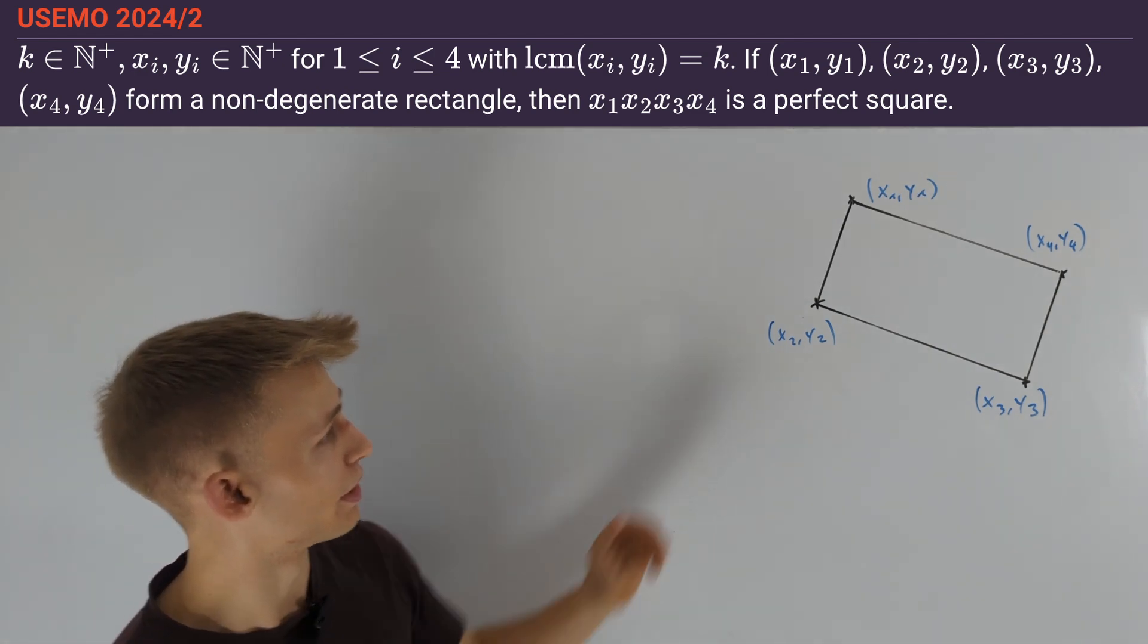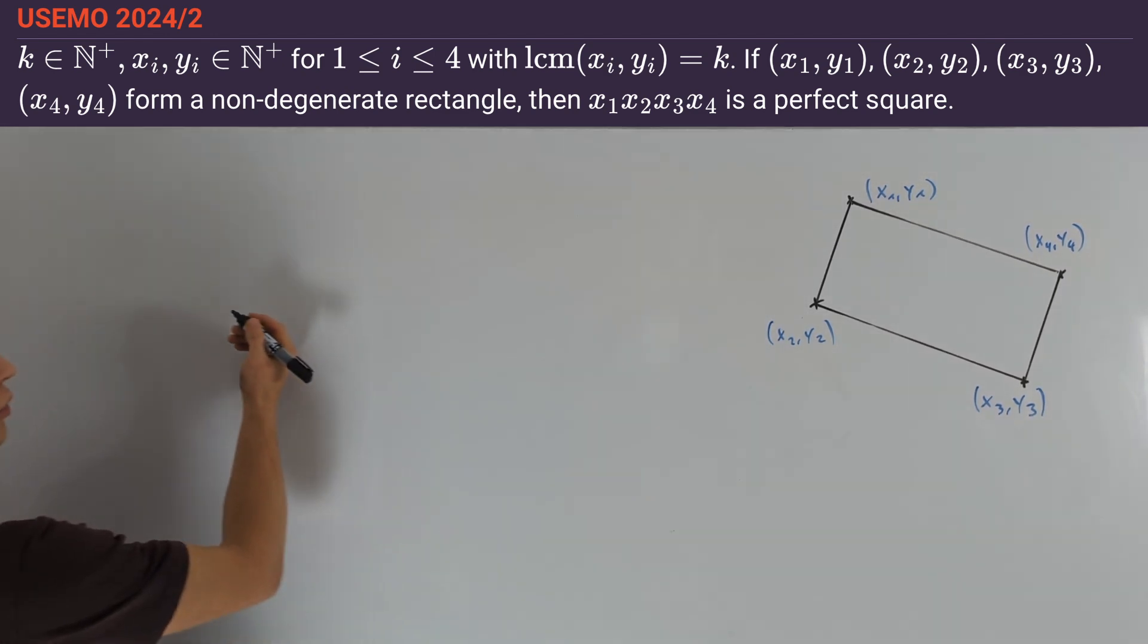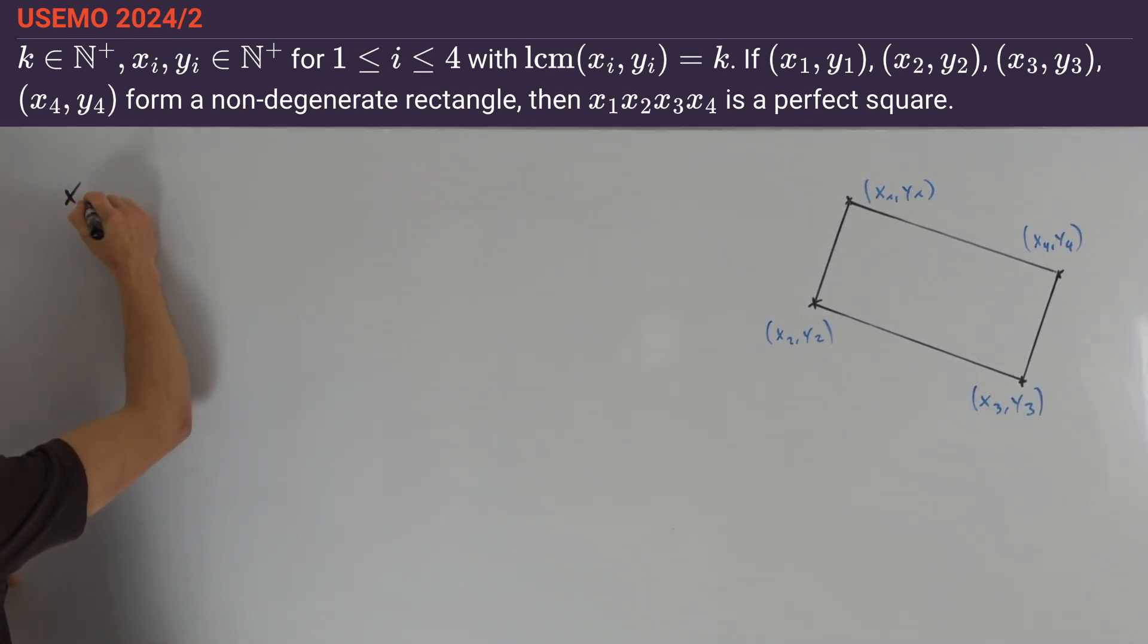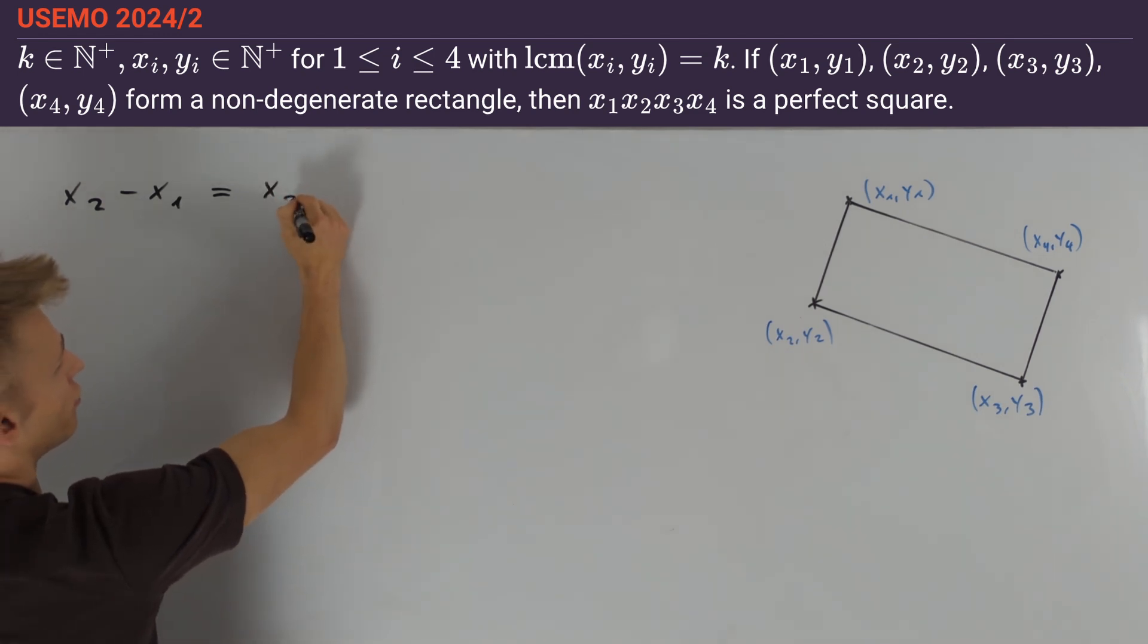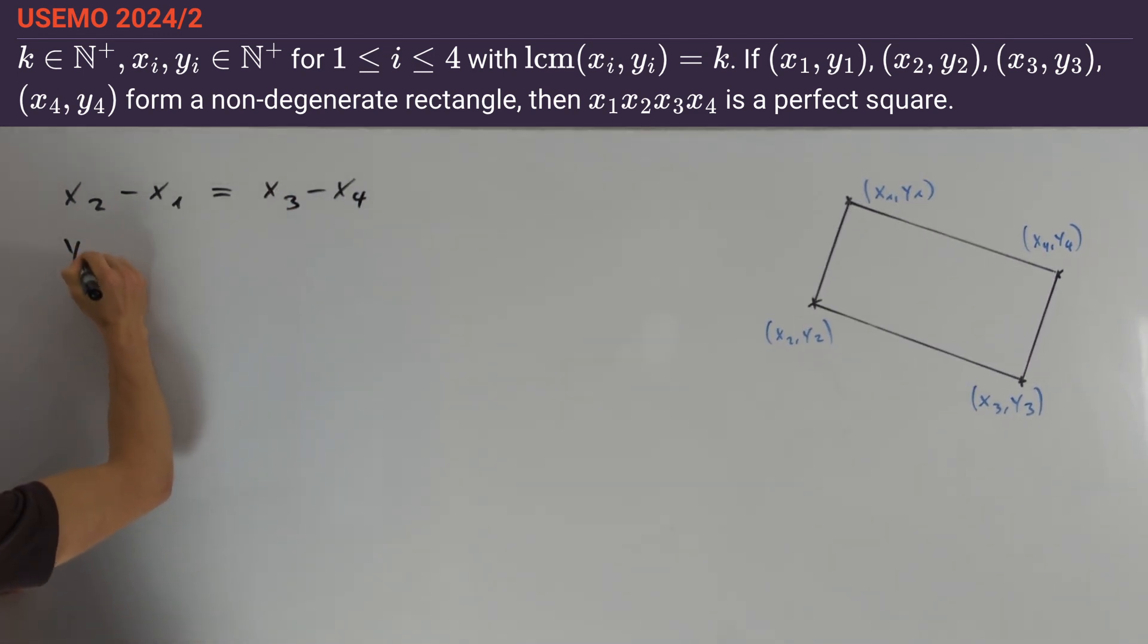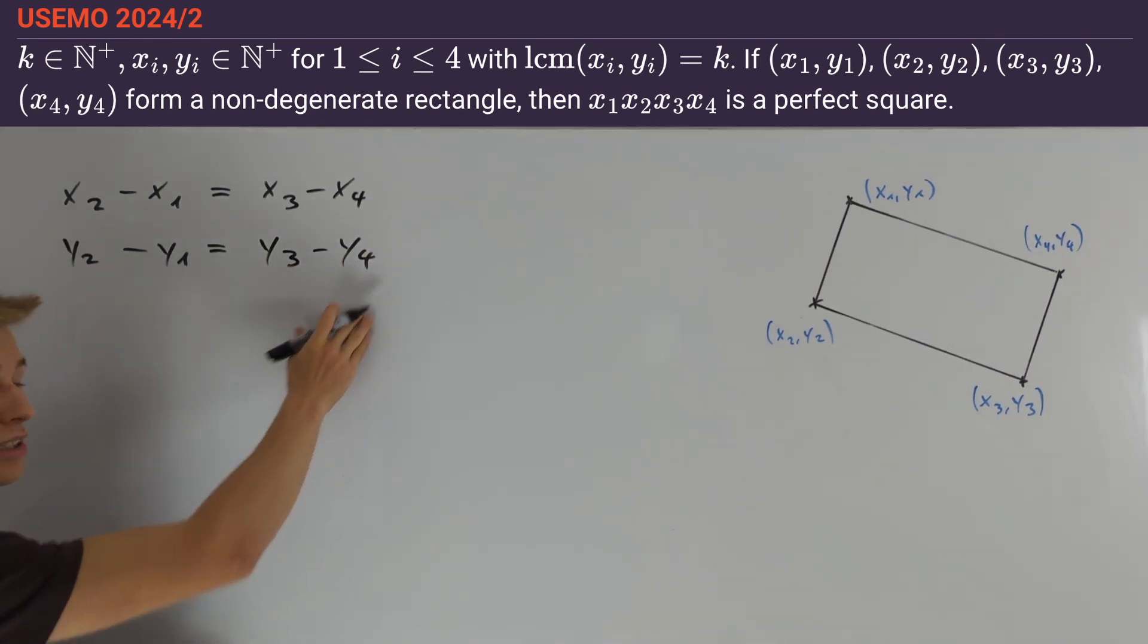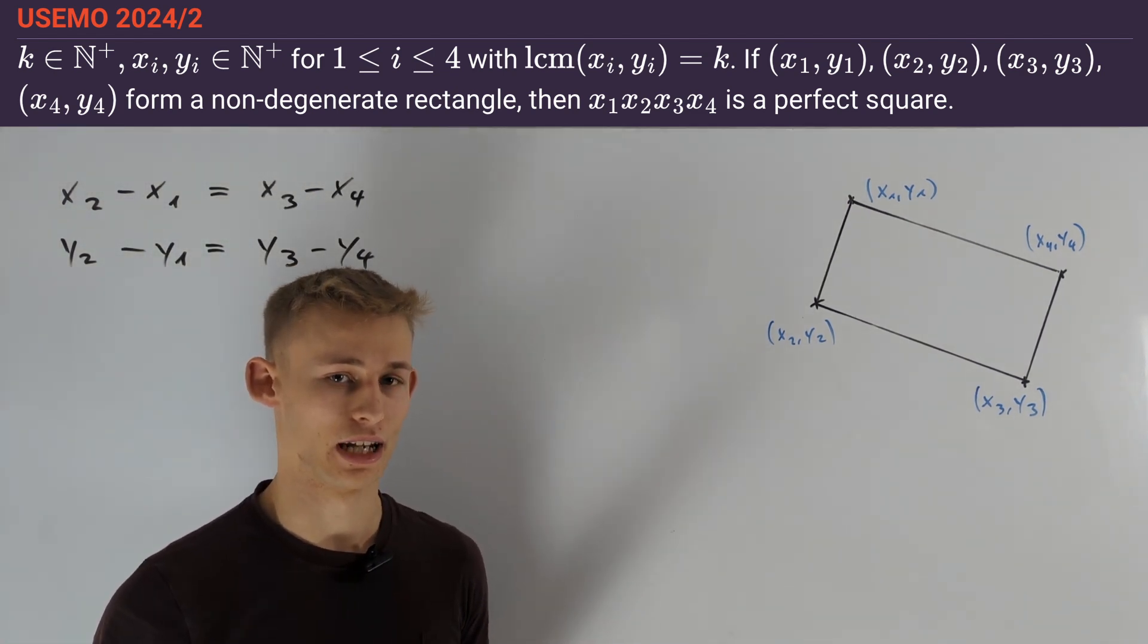Therefore if we subtract these two points we get the same result. In other words we have the equation that x2 minus x1 equals x3 minus x4, and the second equation y2 minus y1 equals y3 minus y4. These two equations are also true in a general parallelogram.